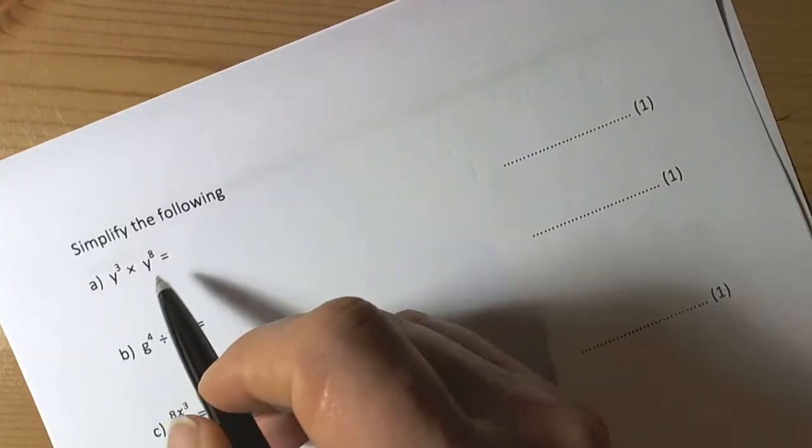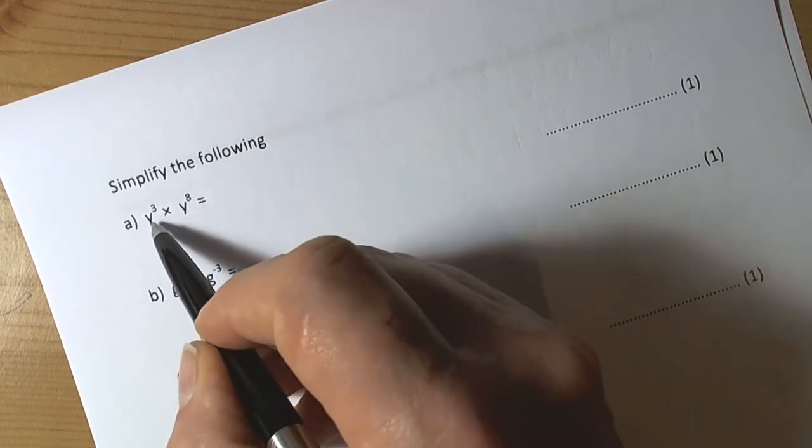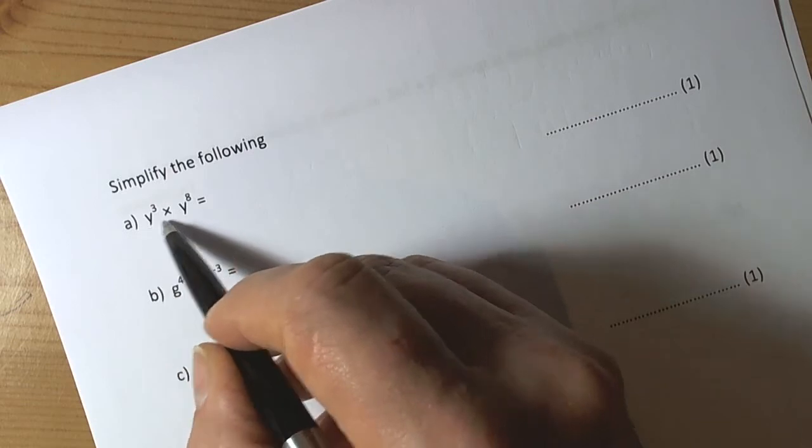Okay, so we're simplifying expressions involving rules of indices. We've got the same base and we've got powers, so we've got some rules that we can use.